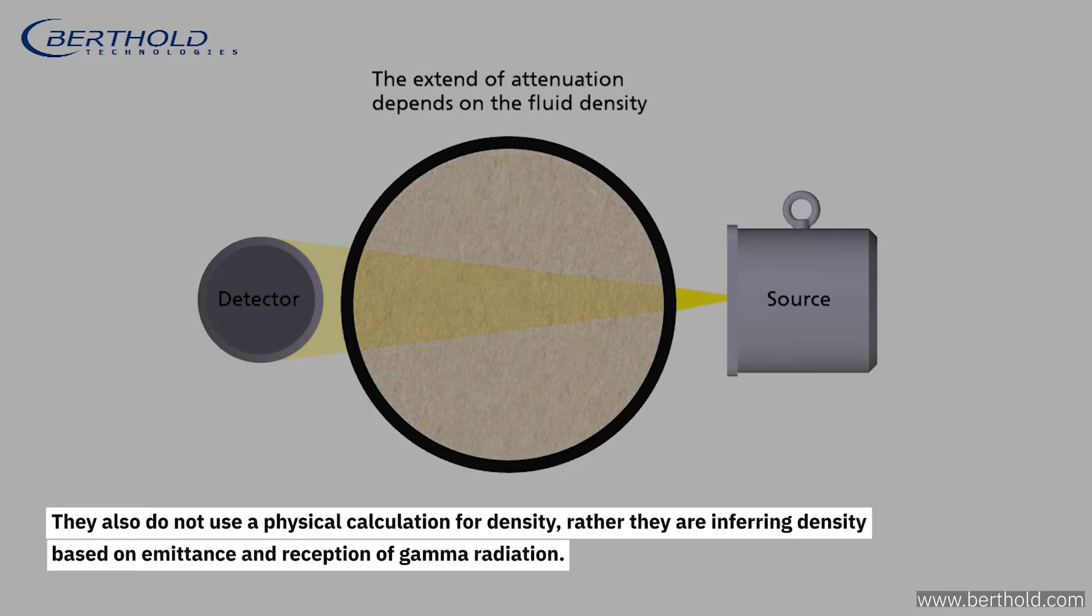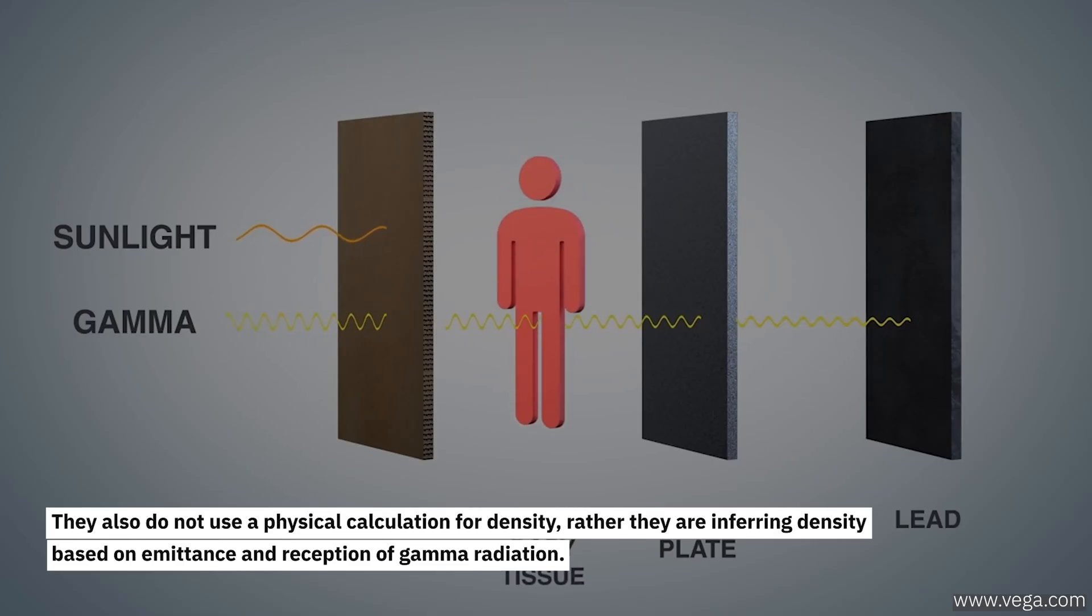They also do not use a physical calculation for density. Rather, they are inferring density based on emittance and reception of gamma radiation.